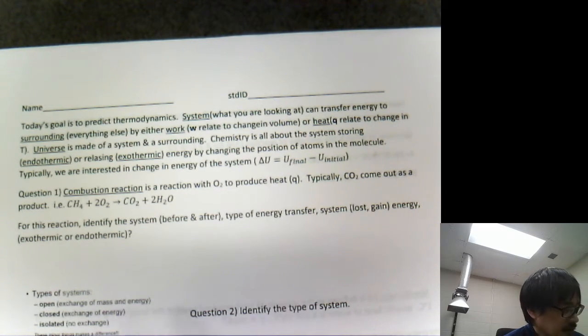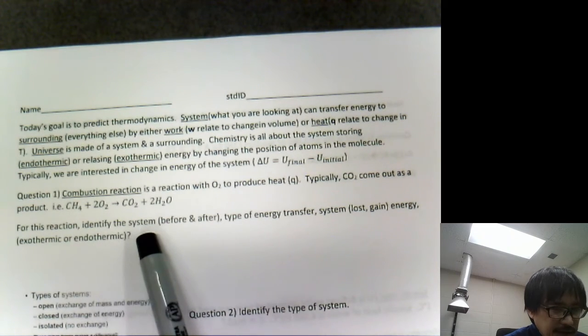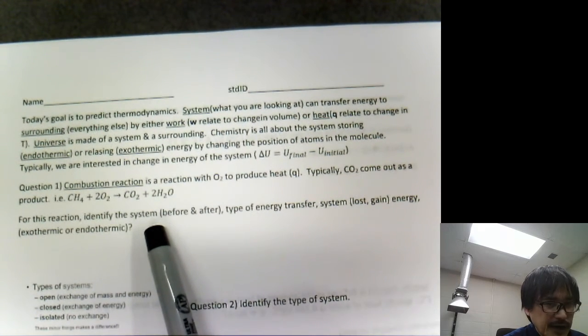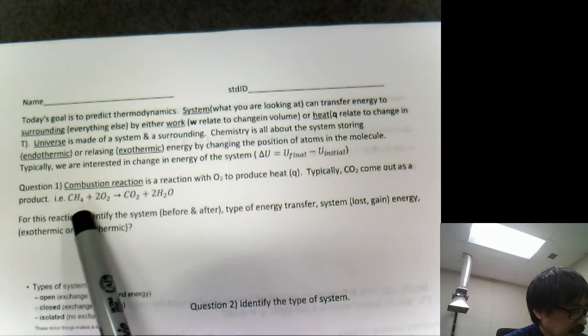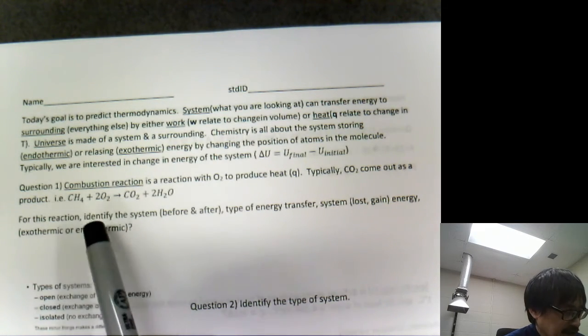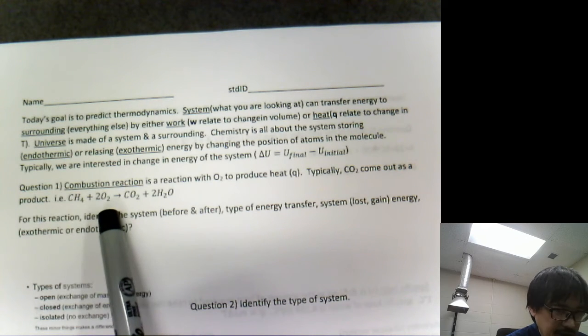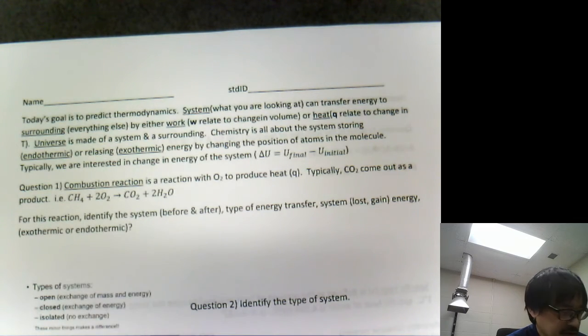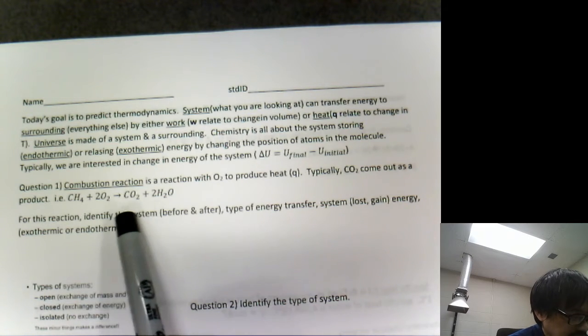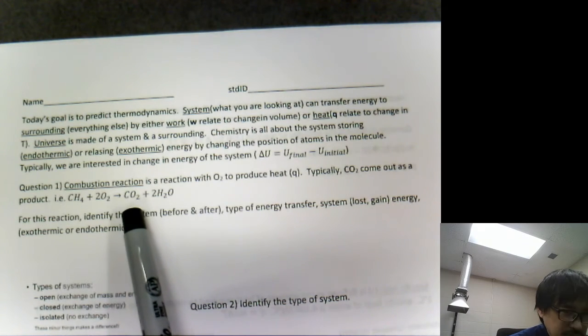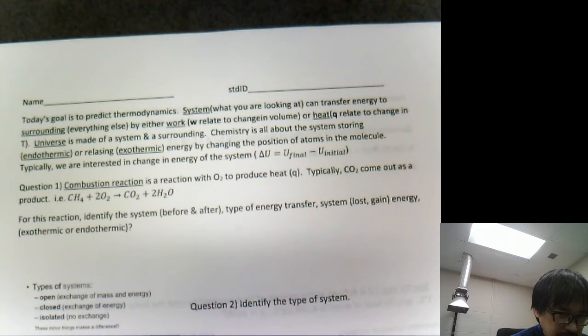So for this reaction, identify the system before and after the reaction. Before, you're looking at these two chemicals. That will be your system, the methane gas and then the oxygen. Those are the system before the reaction, and then after the reaction, CO2 and H2O. Those are the system.